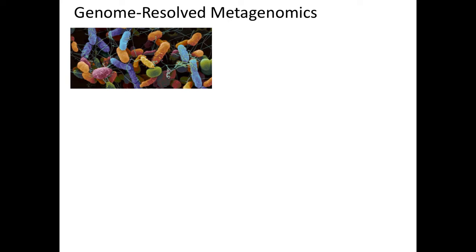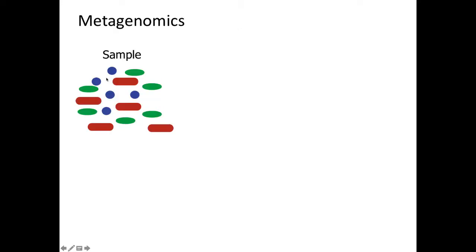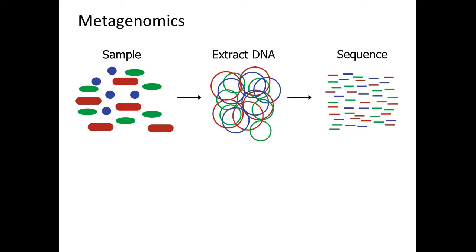With genome-resolved metagenomics, we start with a total mixed microbial community. This is a scanning electron micrograph of the microbiome on your tongue — we all just had lunch, so maybe that's not too gross. I work with landfills, so this is what some of my microbial communities look like — this is landfill leachate, and it smells worse than it looks. In general, all you need is a mixed microbial community, a total sample from your environment of choice. The basic protocol is to extract DNA from all organisms present and sequence that — typically next-generation sequencing, Illumina HiSeq or NextSeq, so you're getting short reads, lots of them.